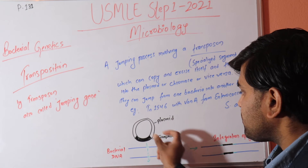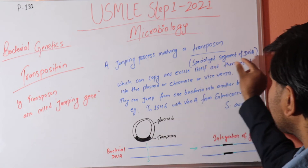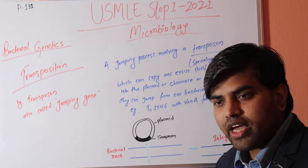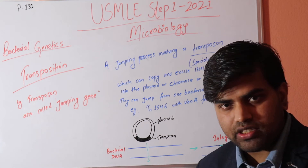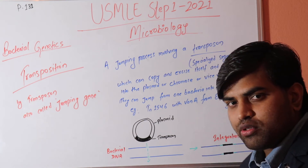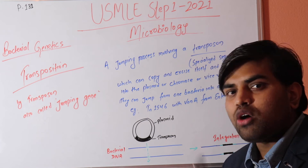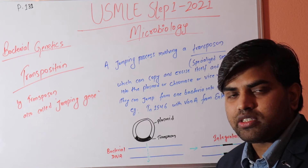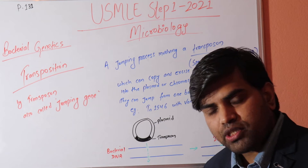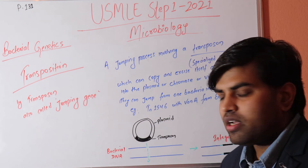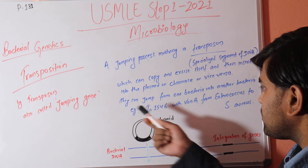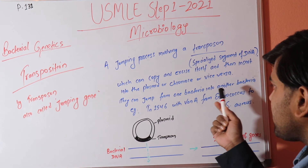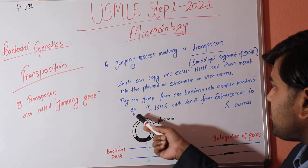Transposons are a special segment of DNA that carry information including drug resistance genes. Since they can transfer from plasmid to plasmid, or from plasmid to bacterial chromosome, within the cell or between cells, this leads to the transfer of genetic material, including drug resistance, from one bacteria to another.